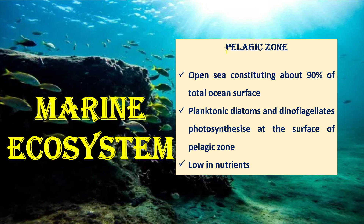The pelagic zone is the open sea, constituting about 90% of the total ocean surface. Photosynthesis occurs in the surface pelagic zone primarily by planktonic diatoms and dinoflagellates. Copepods and arrowworms are the major types of zooplankton, along with active swimming forms such as jellyfish, shrimps and ctenophores. Note that this zone is low in nutrients.